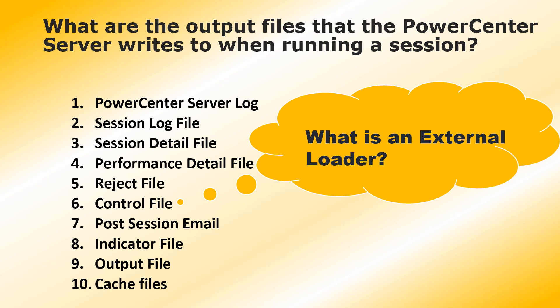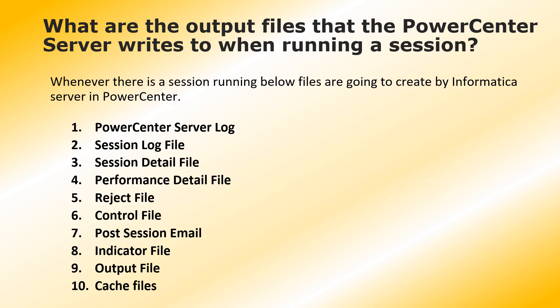Let's go to the answers. For the first question — what are the output files that the Power Center server generates when running a session — they are: Power Center server log, session log file, session detail file, performance detail file, reject file, control file, post session email, indicator file, output file, and cache file. These are the ten files Informatica Power Center server generates when you run a session.